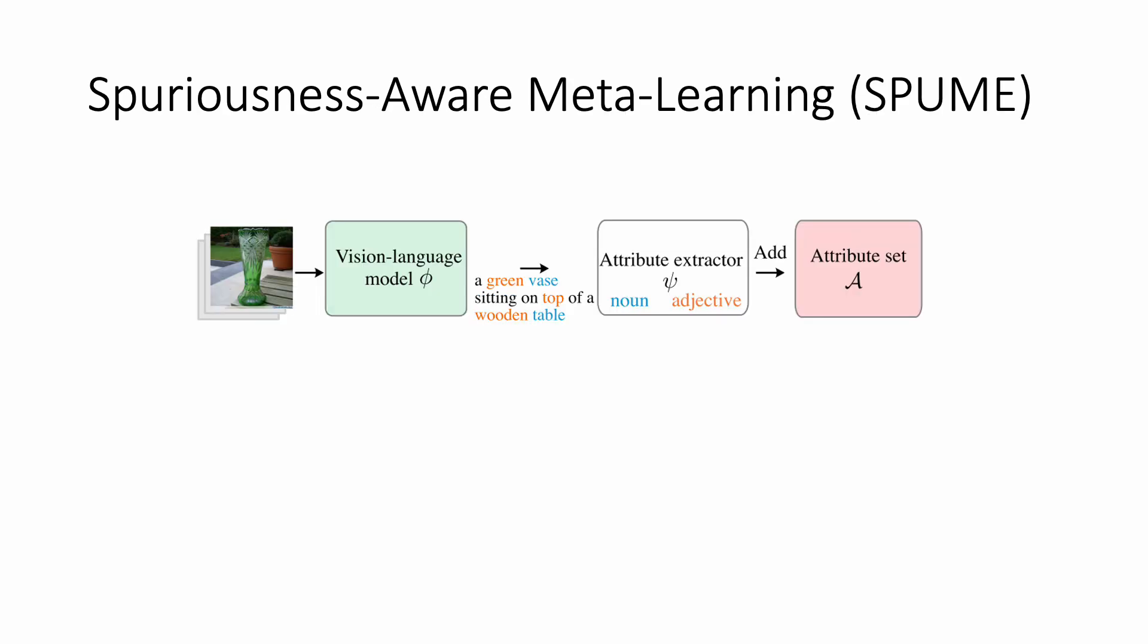To mitigate the reliance on spurious correlations, it is crucial to know spurious correlations in data. However, this typically requires human-guided annotations, which are costly to obtain, especially on large datasets.